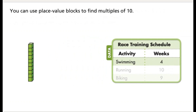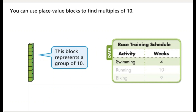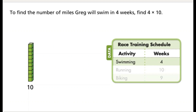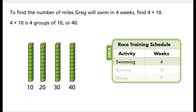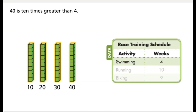You can use place value blocks to find multiples of 10. This block represents a group of 10. To find the number of miles Greg will swim in 4 weeks, find 4 times 10. 4 times 10 is 4 groups of 10, or 40. 40 is 10 times greater than 4. Greg will swim 40 miles.